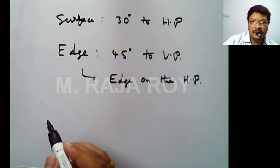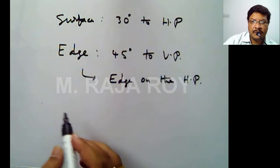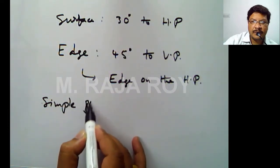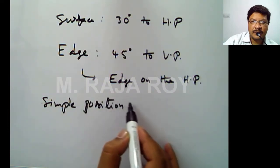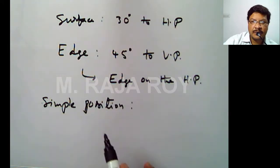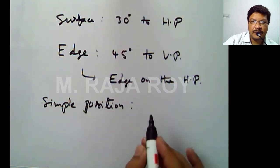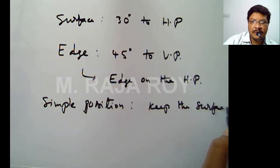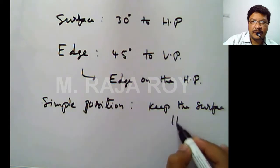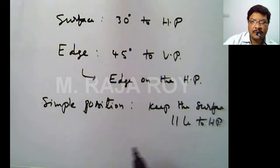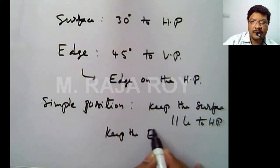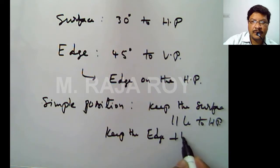After extracting this data carefully from the problem, you decide how to draw the simple position. In the simple position, since the surface is inclined to HP, keep the surface parallel to HP. The edge is 45 degrees to VP, so keep the edge perpendicular to VP.